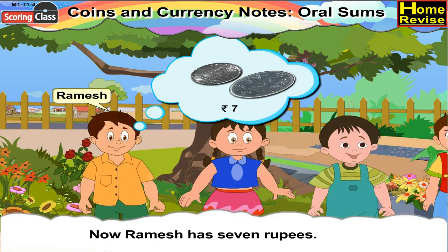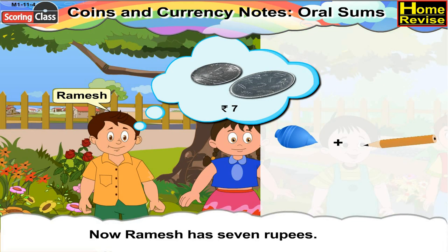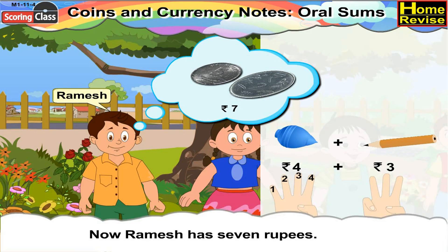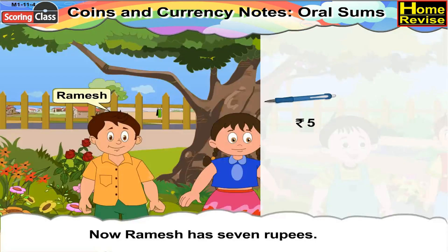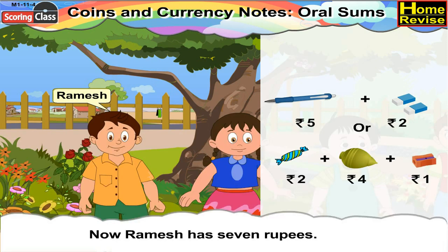Now Ramesh has 7 Rupees. So he can buy one top plus one pencil — the cost of one top is 4 Rupees and cost of one pencil is 3 Rupees, which means 4 Rupees plus 3 Rupees equals 7 Rupees. Other than these, he can also buy 1 pen plus 2 erasers, or 1 sweet plus 1 top plus 1 sharpener.